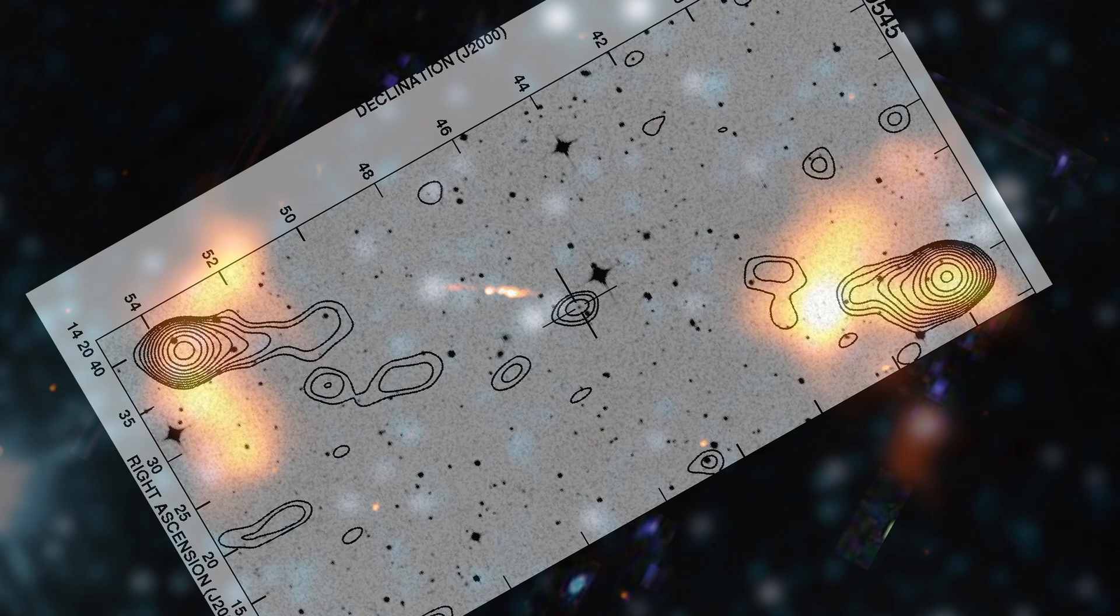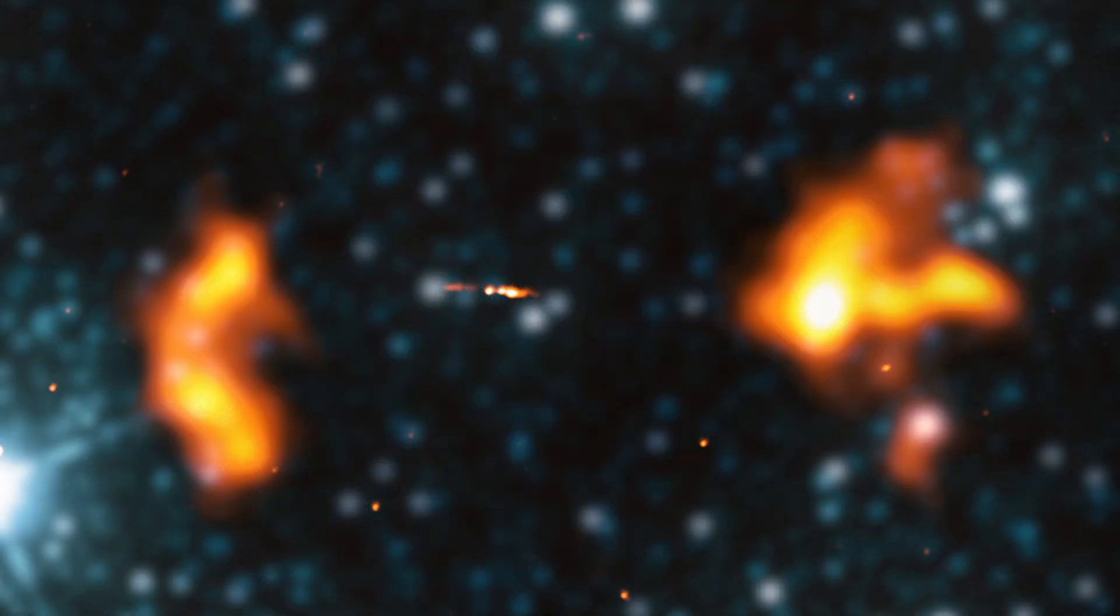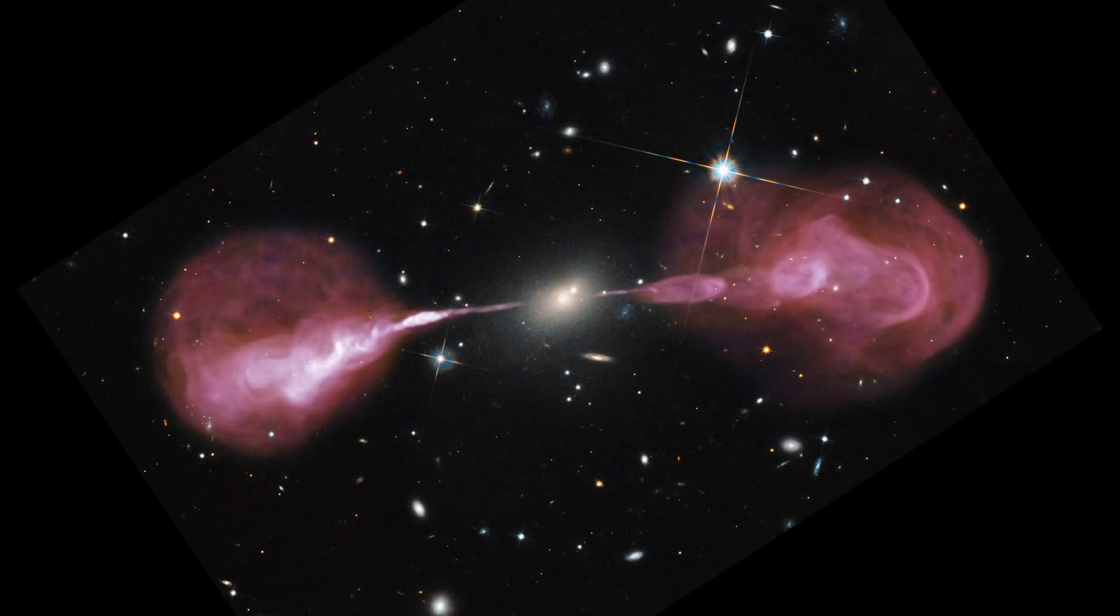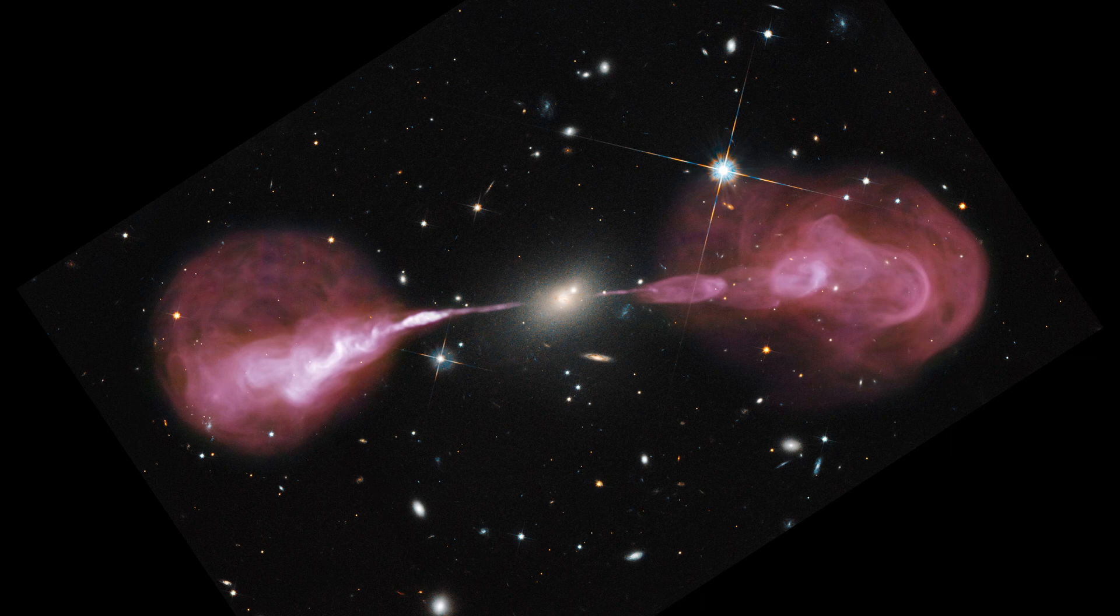We may also not be viewing all of the galaxies side on and some are very likely at different angles which would alter the size of one lobe compared to the other and also the distance from it to the host galaxy.